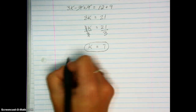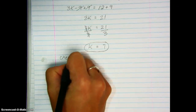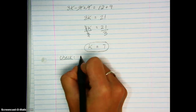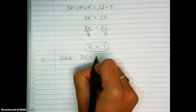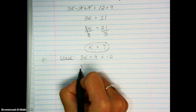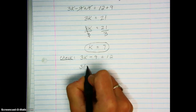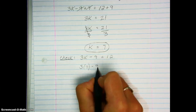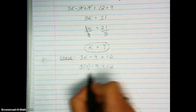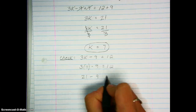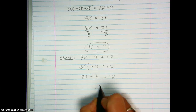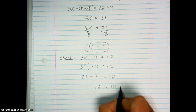Again, you can check your solution — on a quiz or test you always want to check your answers in case you made a minor calculation mistake. Just take your equation, plug in the solution in place of the variable, and see if it makes both sides true. 3 times 7 is 21, and 21 minus 9 is in fact 12, so it makes the statement true.